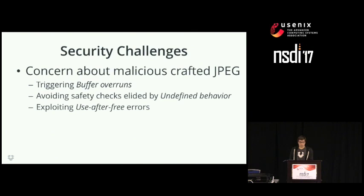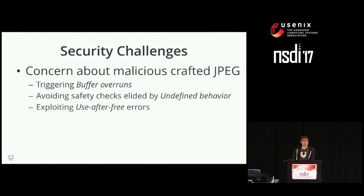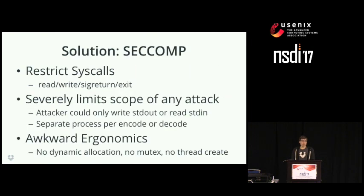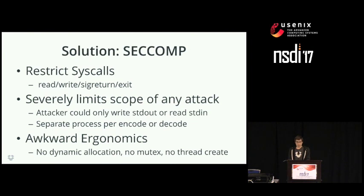Now that we've crafted the algorithm, we were still concerned about security. A maliciously crafted JPEG might trigger buffer overruns, find undefined behavior, allow the compiler to elide bounds checks, or exploit use-after-free errors. One solution could have been to write Lepton in a language without undefined behaviors, like Rust. But we opted to run Lepton in a seccomp jail. Seccomp limits any syscalls except read, write, exit, and seek. By starting a separate process per decode and always validating results with an input SHA-256 sum, we leave the attacker few options to cause harm.